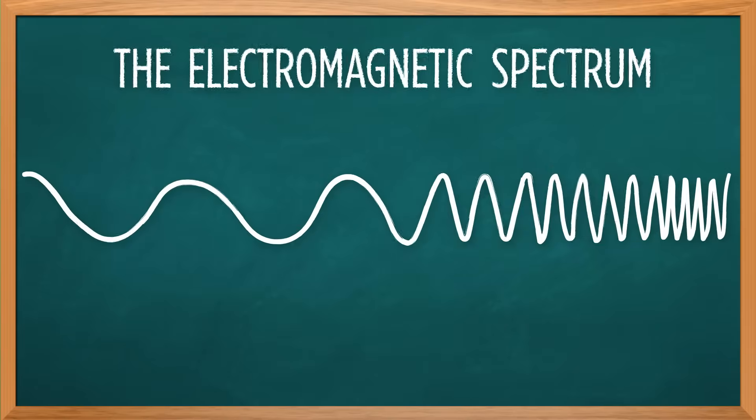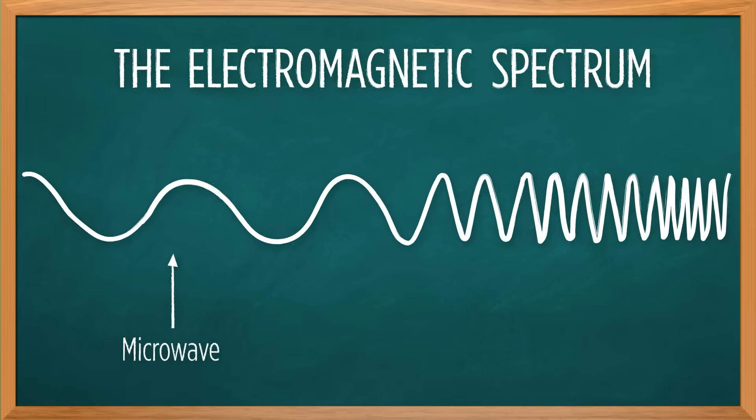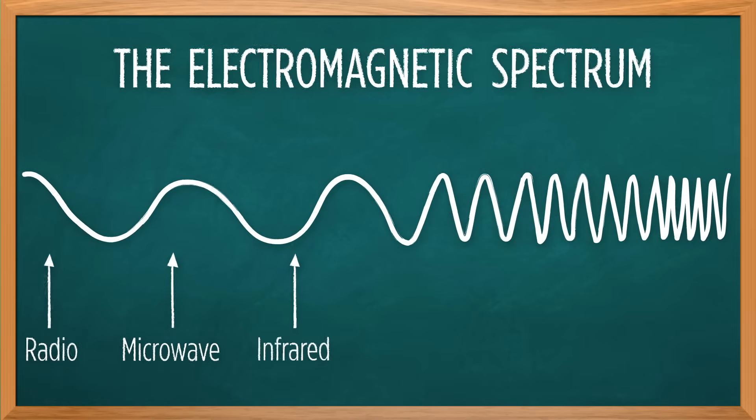That's a good question. Microwaves are a type of wave on the electromagnetic spectrum, and they're kind of sandwiched between radio waves and infrared radiation.